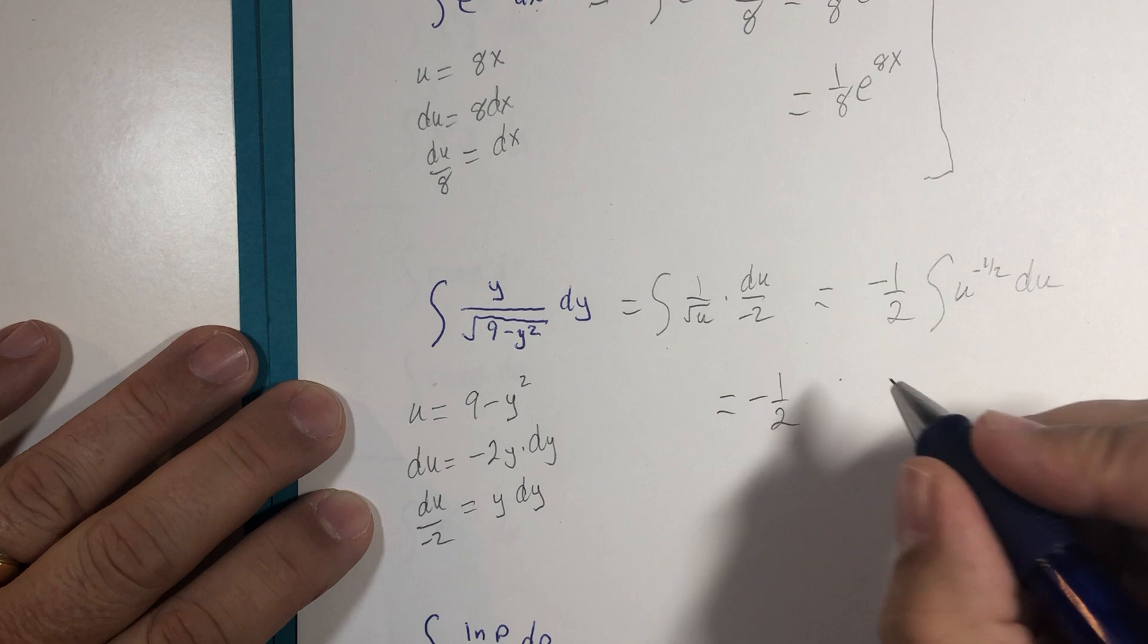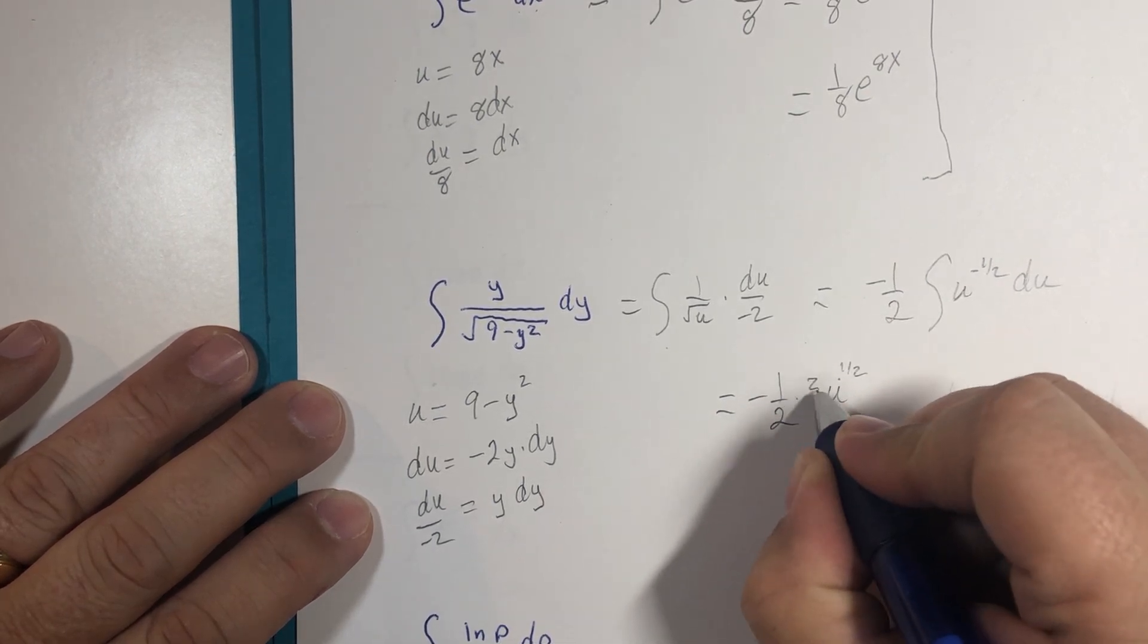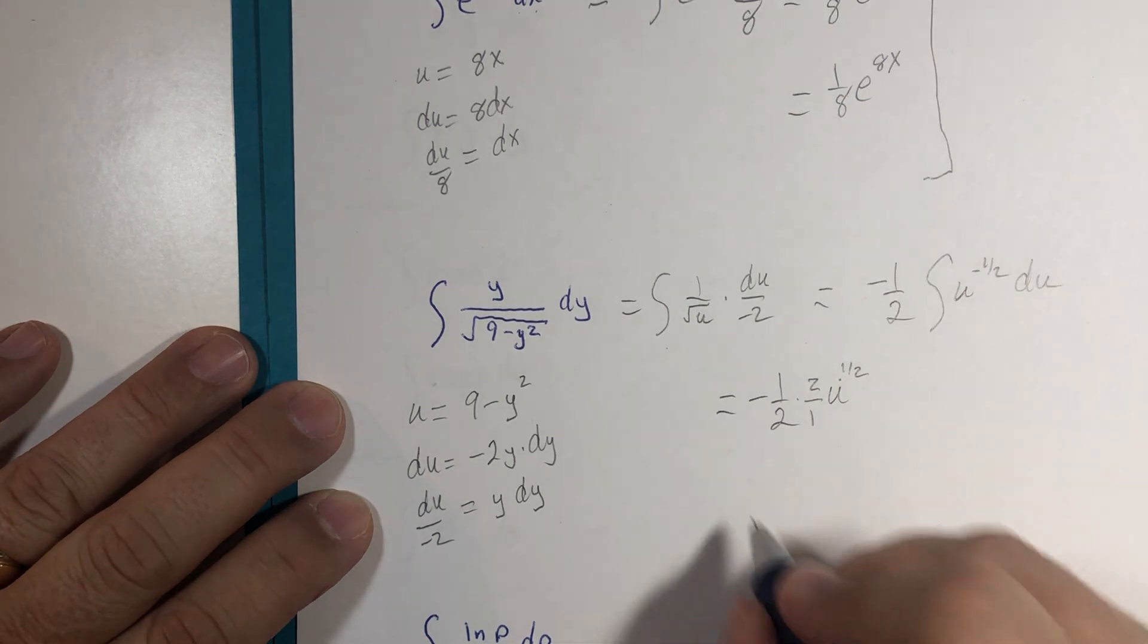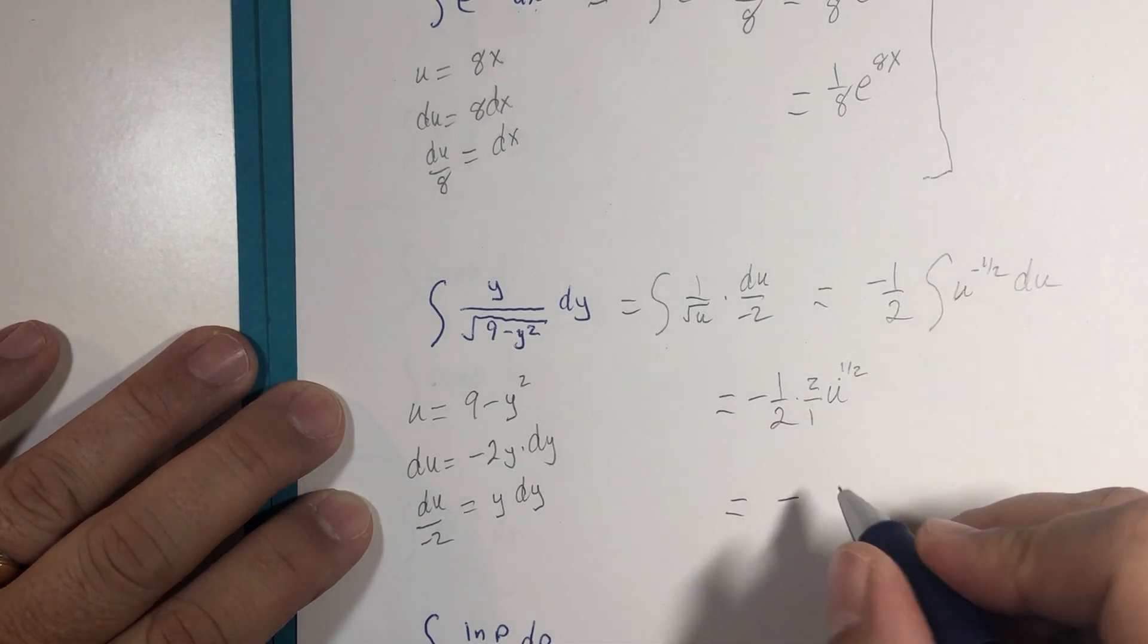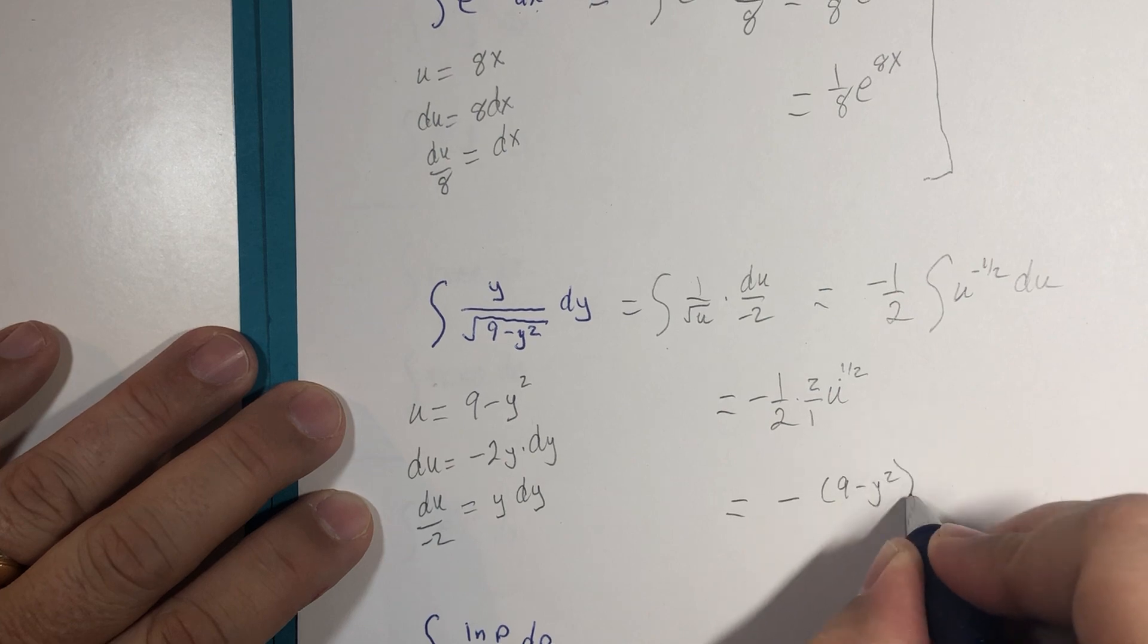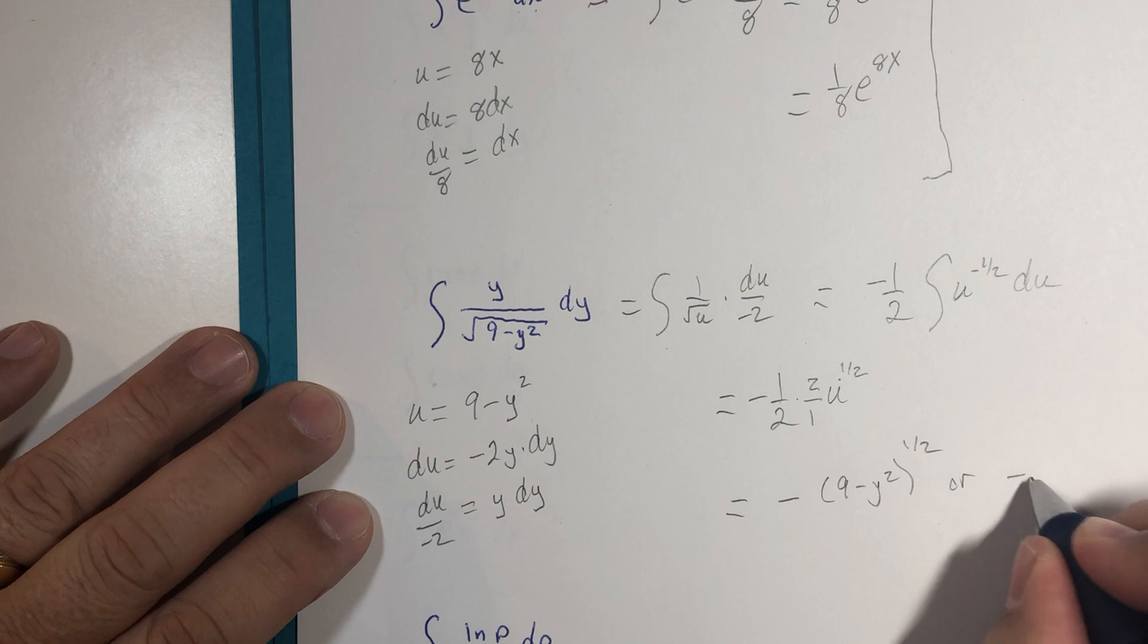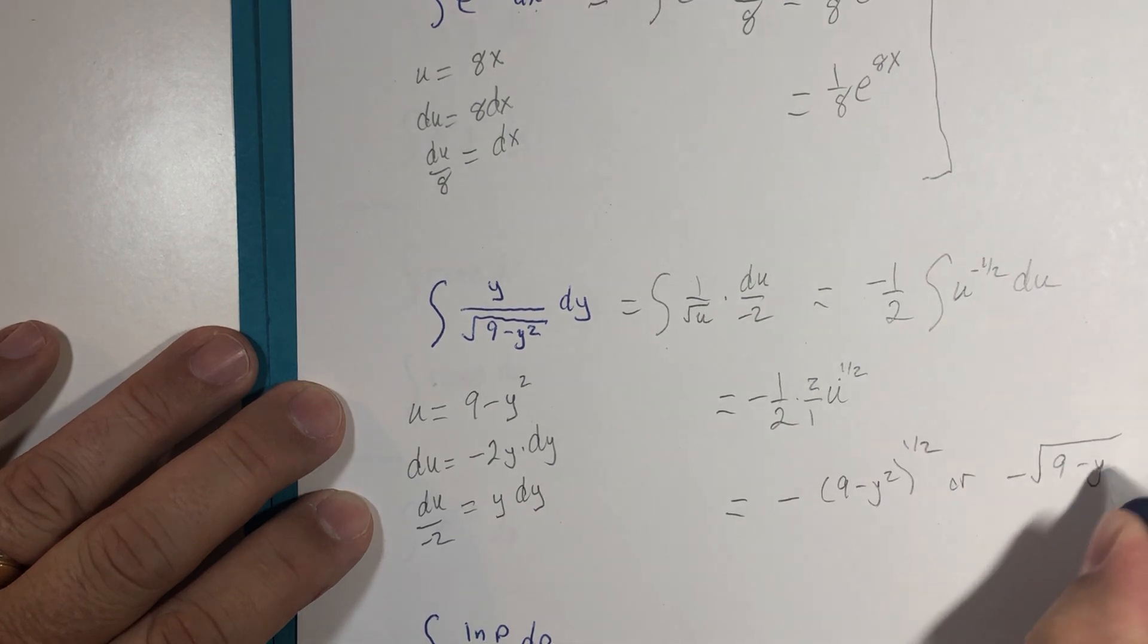And we get u to the positive one-half, multiply by 2 over 1 and a constant. This leads us with negative square root of 9 minus y squared to the positive one-half power, or of course we could write it this way if we'd like.